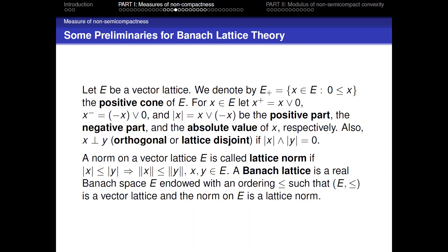Let E be a vector lattice or Riesz space. We denote by E₊ the set of positive elements, called the positive cone of E. The positive part of an element is the supremum of x and 0; the negative part is the supremum of −x and 0; and the absolute value of x is the supremum of x and −x. Two elements are lattice disjoint or orthogonal if the infimum of their positive parts is 0. The norm on a vector lattice E is called a lattice norm if |x| ≤ |y| implies ‖x‖ ≤ ‖y‖.